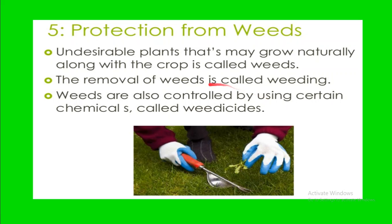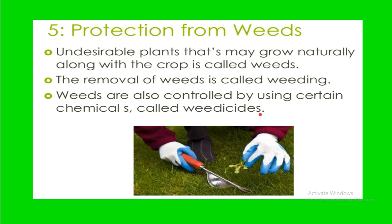The fifth practice is protection from weeds. Undesirable plants that may grow naturally along with the crop are called weeds. The removal of weeds is called weeding. Weeds are also controlled by using certain chemicals called weedicides, similar to pesticides.